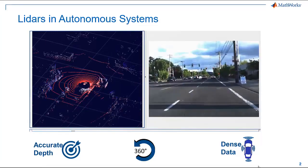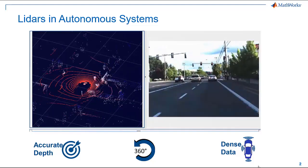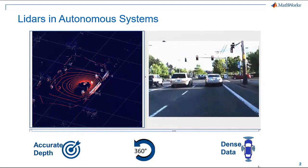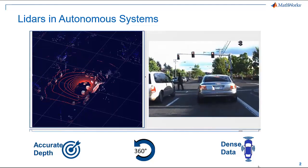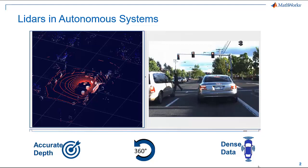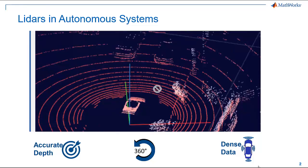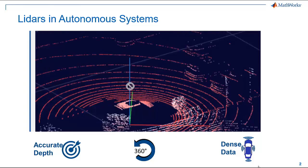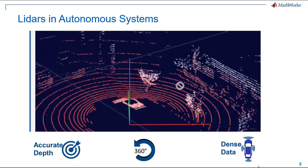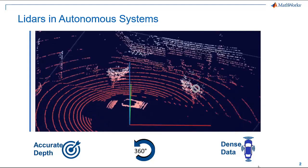LiDARs are now being used in autonomous systems along with other sensors such as cameras and radars for environmental perception. There are three key benefits of using LiDARs in our systems. Firstly, it provides an accurate depth field of the surrounding objects. Secondly, it provides a 360 view of our surroundings with just one sensor, while we need multiple calibrated sensors in the case of cameras and radars. Finally, the dense data from LiDAR sensors improves the accuracy when we are using machine learning and deep learning algorithms.